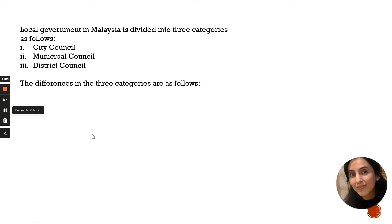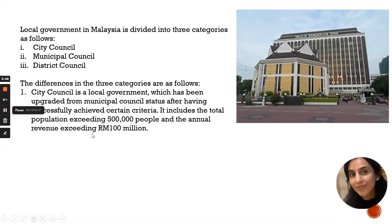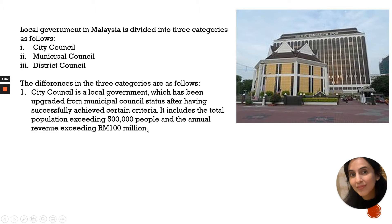City Council is a local government which has been upgraded from municipal council status after having successfully achieved certain economic development criteria. For example, Kuala Lumpur's DBKL, and Majlis Bandaraya Ipoh in Perak — 'Bandaraya' means City Council. They have a population exceeding 500,000 people and annual revenue of more than 100 million. The economic activities in Ipoh are greater than other parts of Perak like Perak Tengah and Manjung.